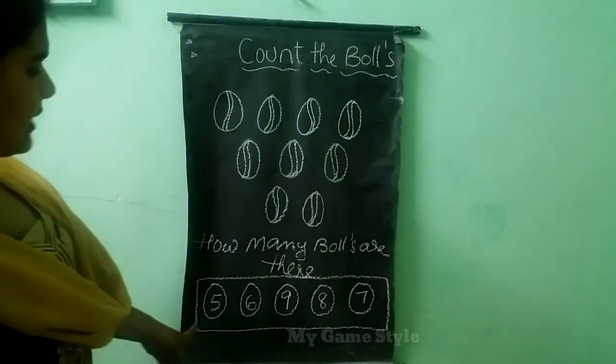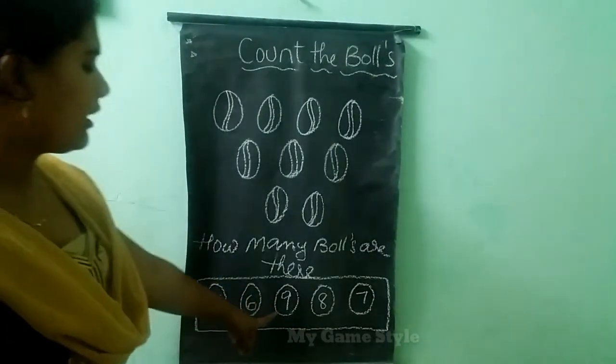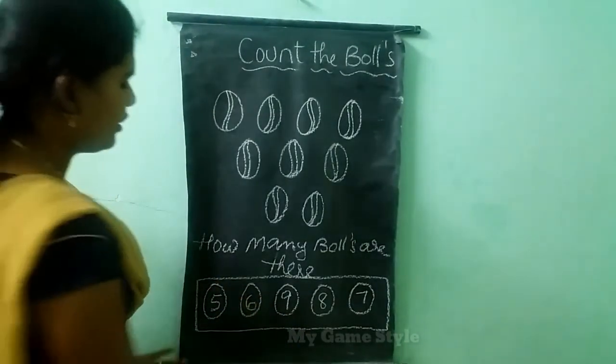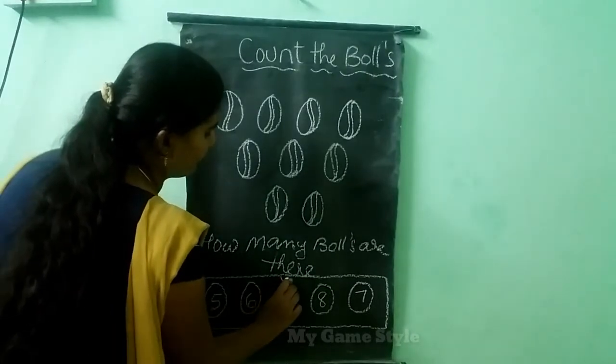Here total 9 balls are there. So where is 9, children? Here it is 9. So this is the correct answer, so we need to tick them.